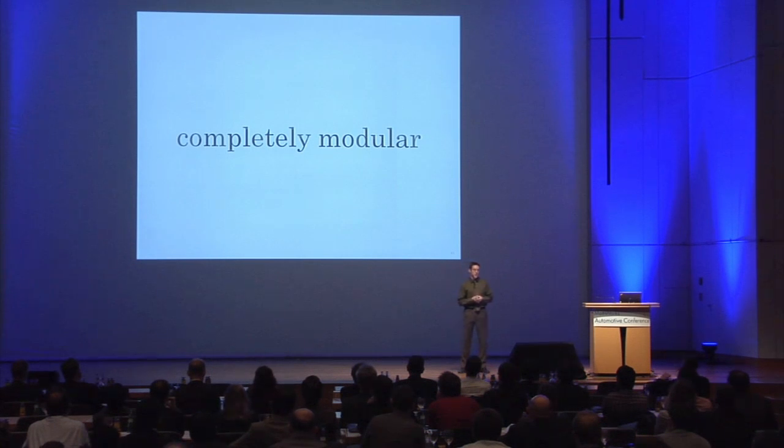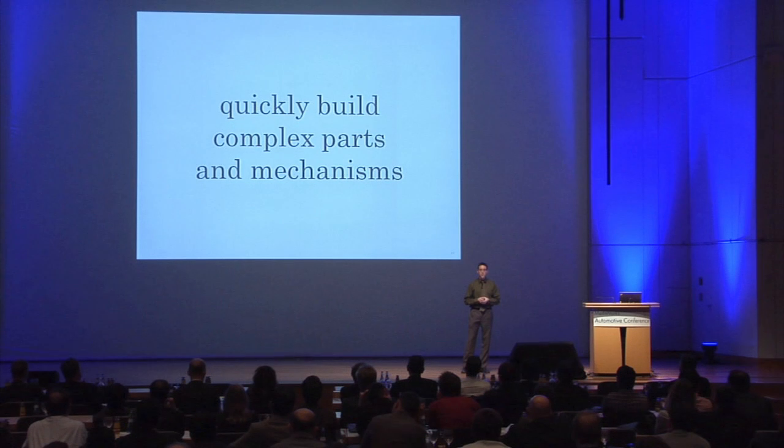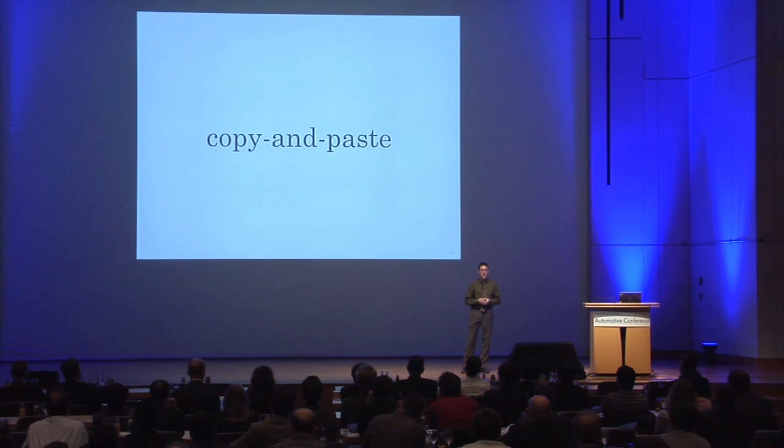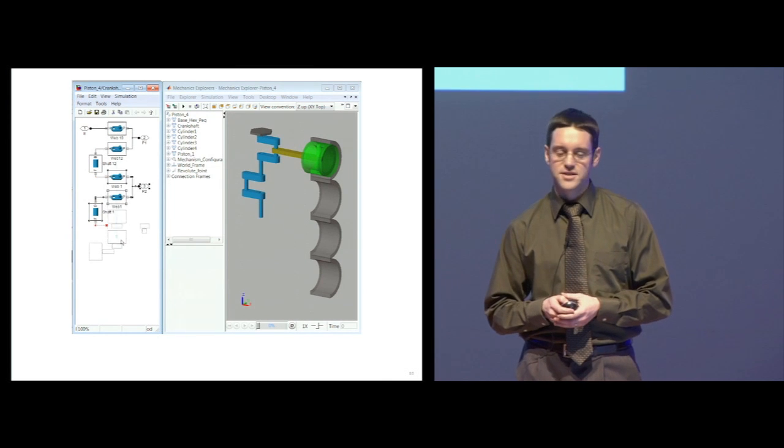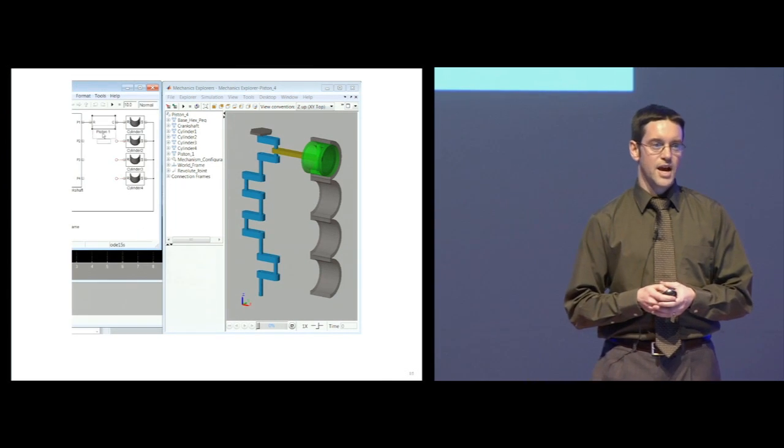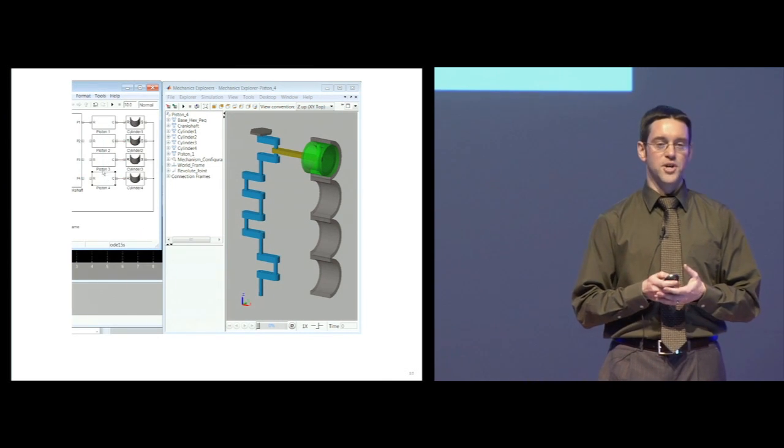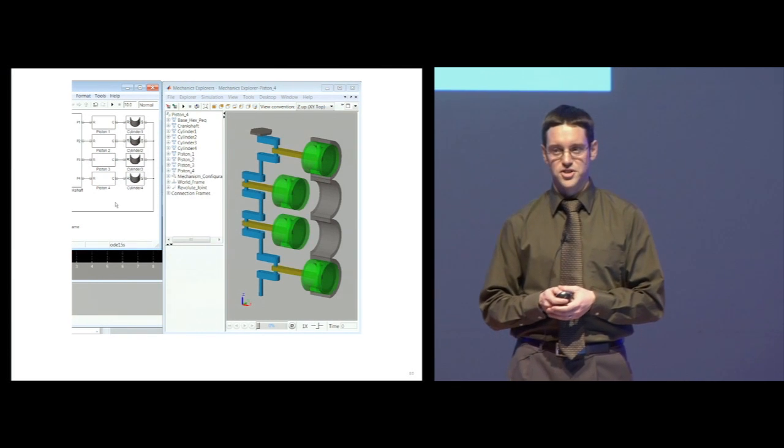What this means is you can quickly build complex parts and mechanisms by using copy and paste. A single crankshaft part can be created by copying and pasting the solids that you define, and a single piston assembly can be copy and pasted to create a four-cylinder engine.